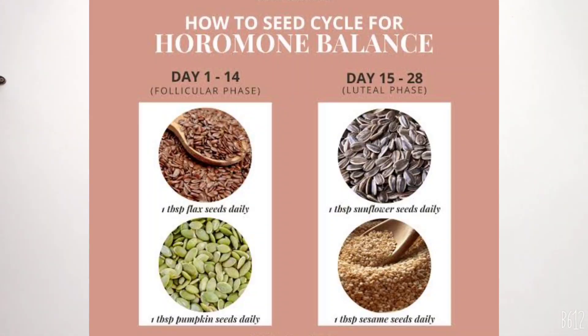I already mentioned there are two phases in the menstrual cycle — one is the follicular phase and the luteal phase. The first phase is from day 1 to day 14. In this first phase, we use two different seeds. In this phase, we release estrogen. The seeds for the first phase are flax seeds. Flax seeds will help and they may be white or green in color. Flax seeds are used for the first phase.